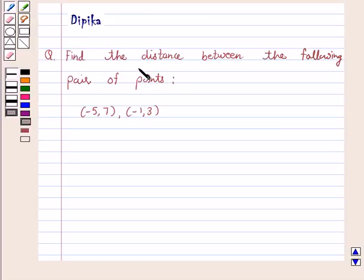Hello and welcome to the session. I am Deepika here. Let's discuss the question. Find the distance between the following pair of points: (-5, 7) and (-1, 3).